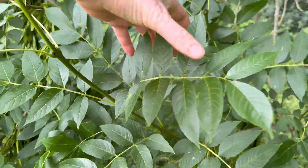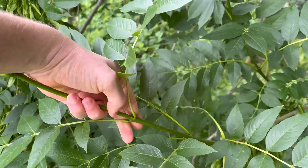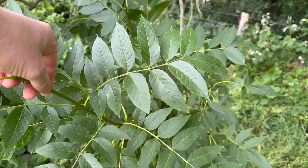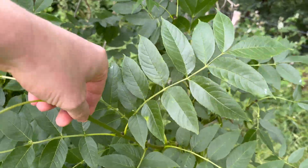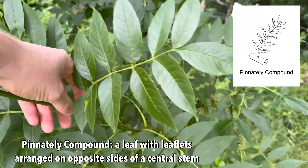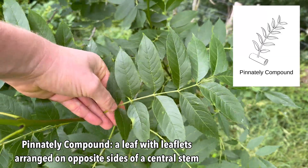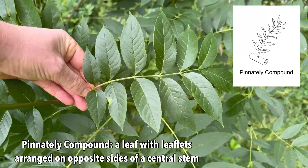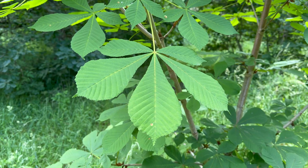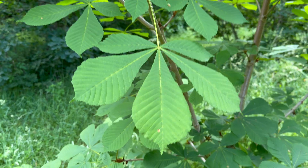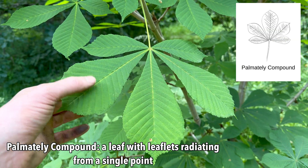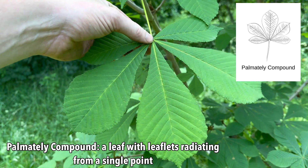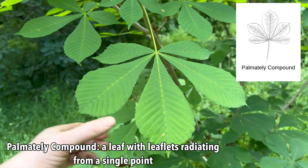All of this from where it attaches to the stem is one leaf. Compound leaves can be pinnately compound, like ash, where you've got the leaflets growing along a central stem, or they can be palmately compound, like this horse chestnut, where the leaflets spread out from a central point like fingers from the palm of a hand.